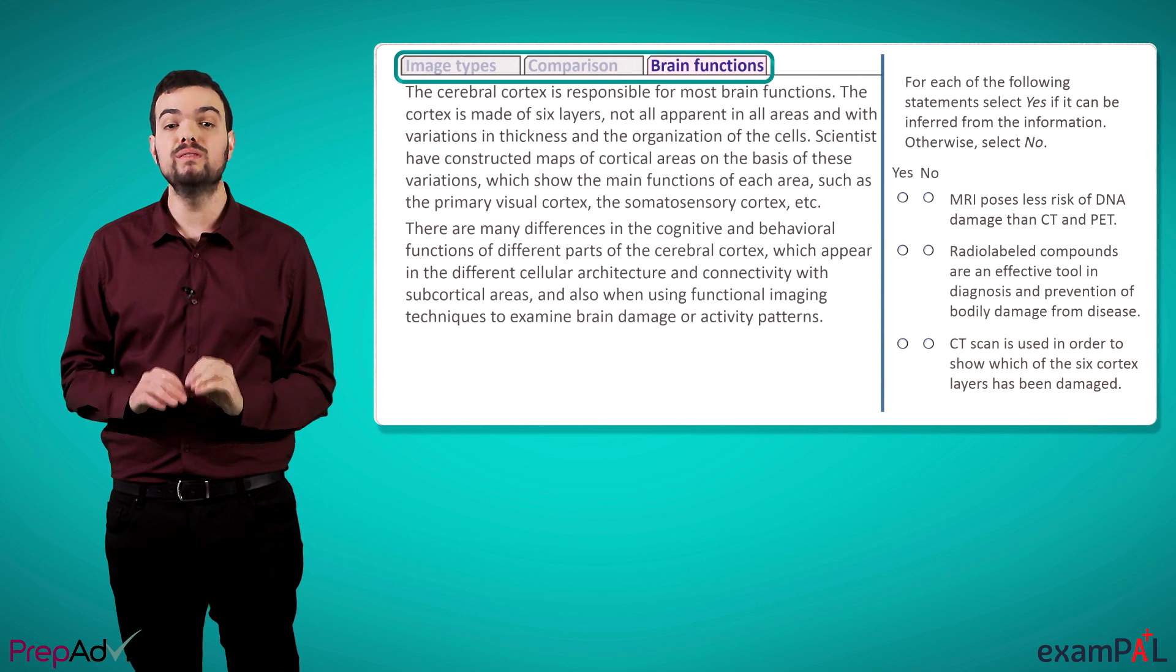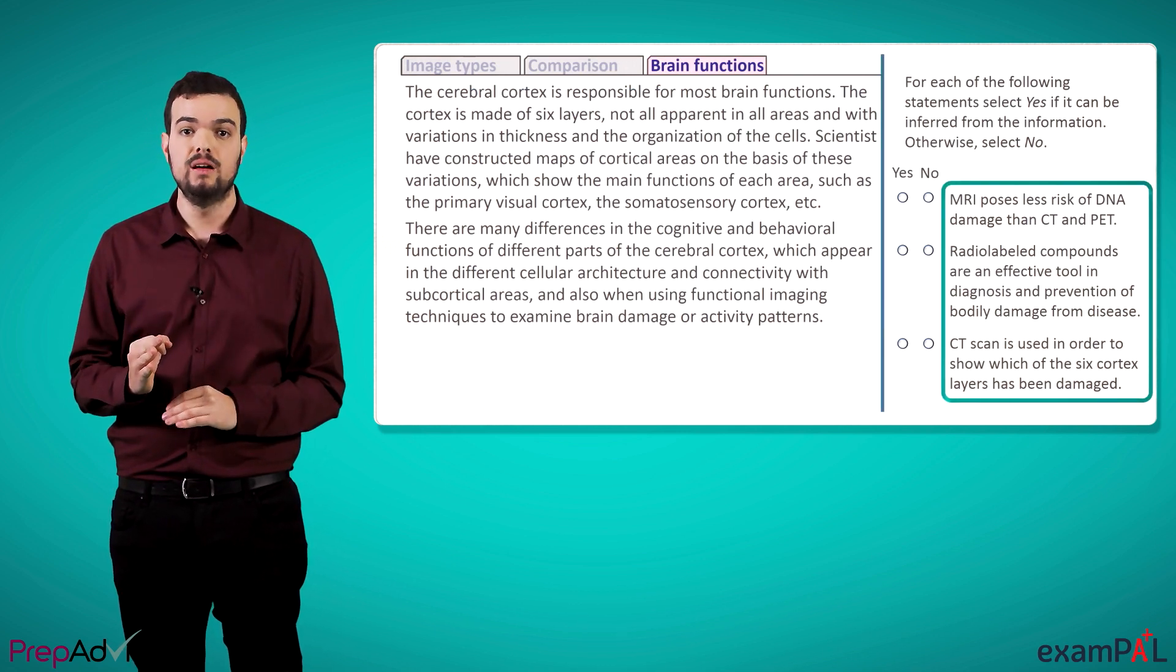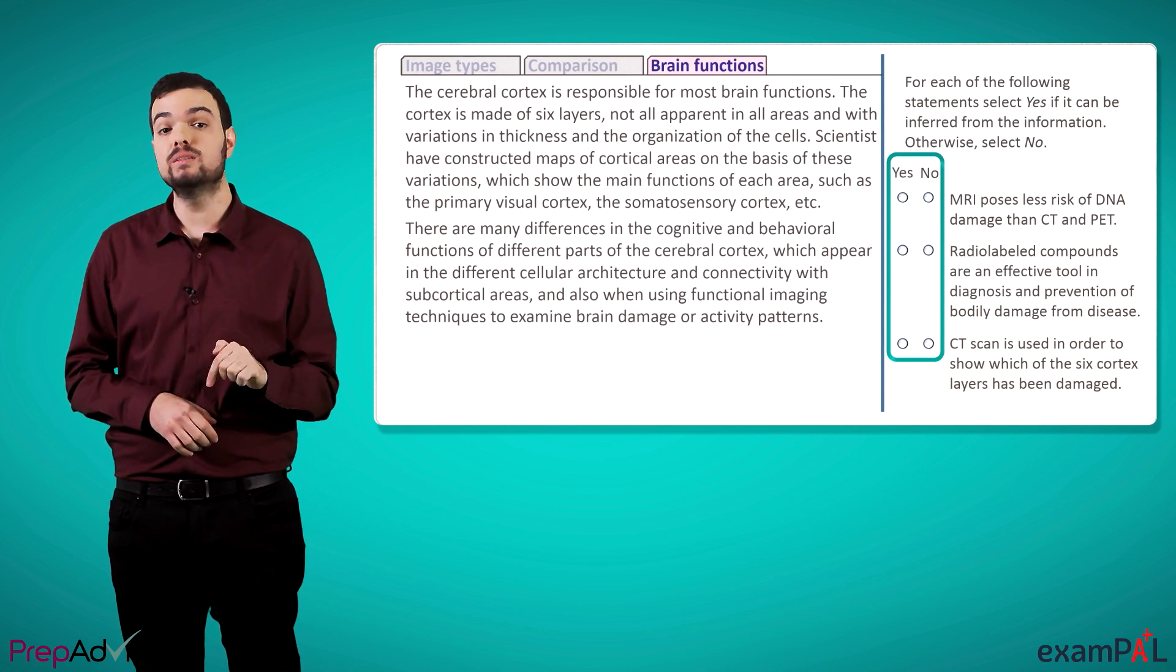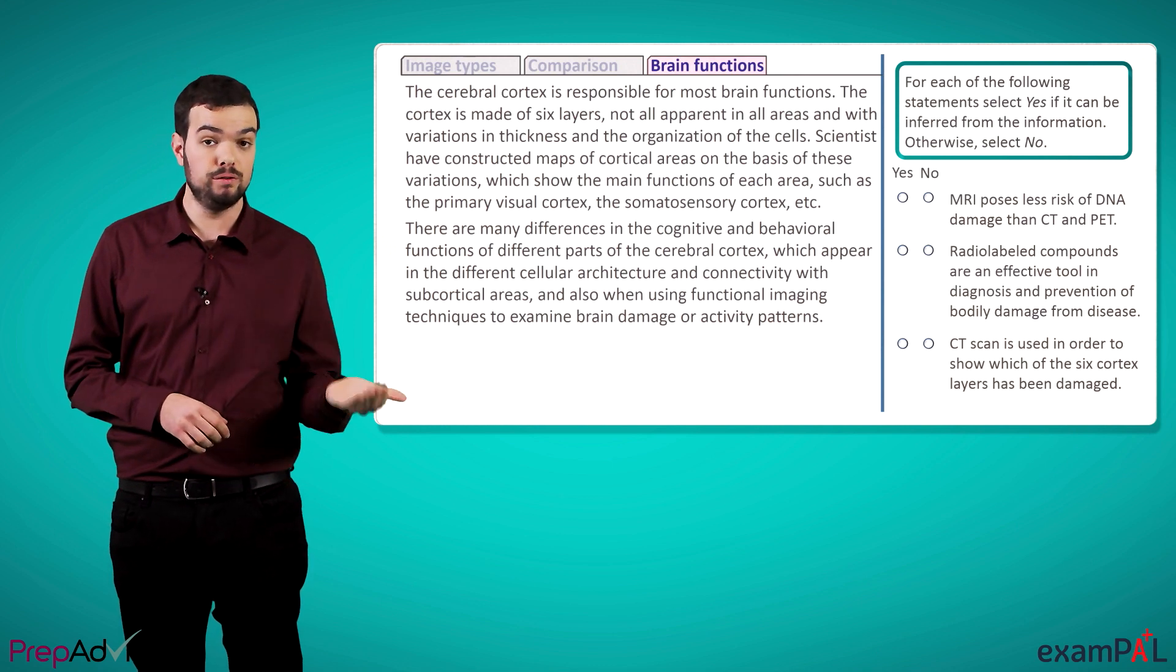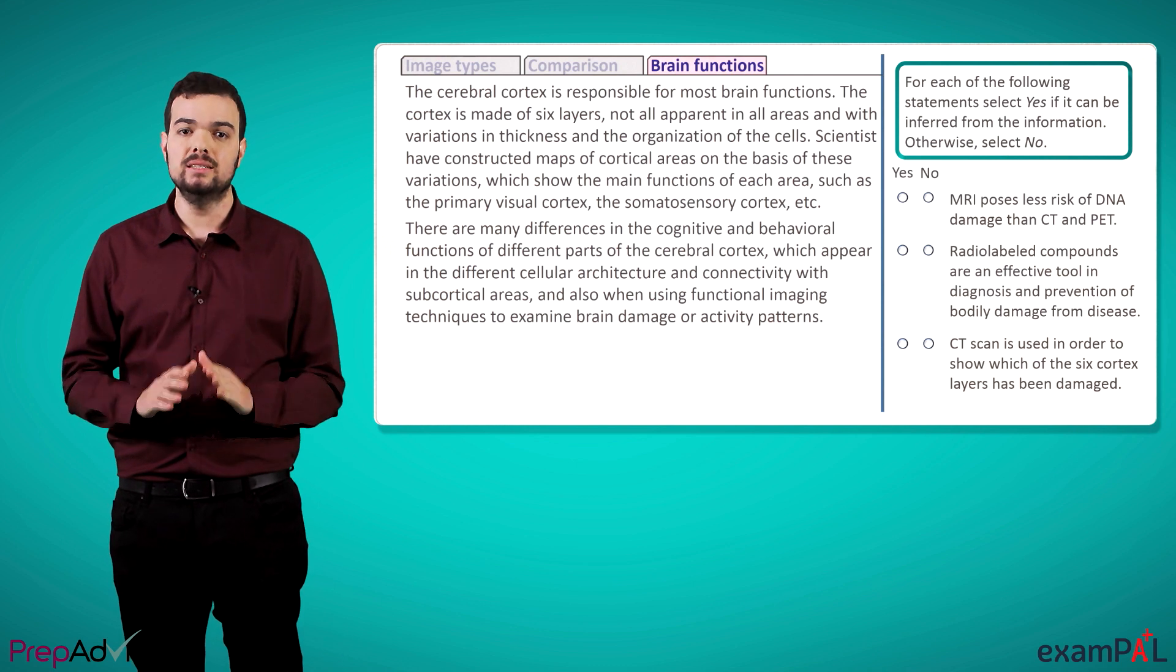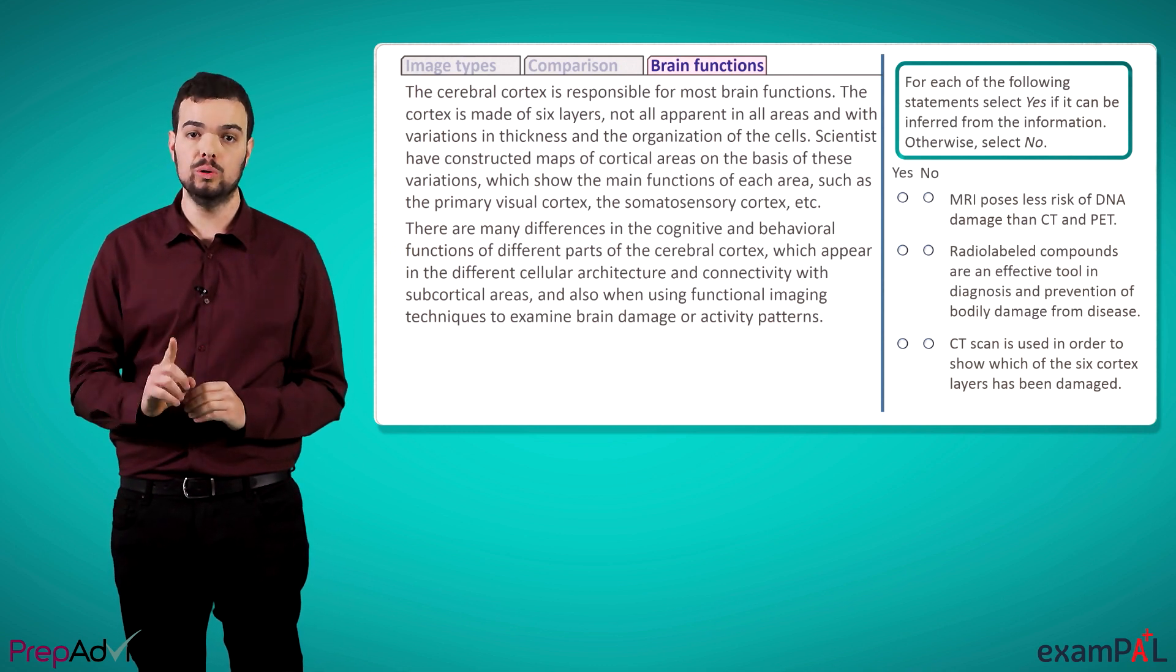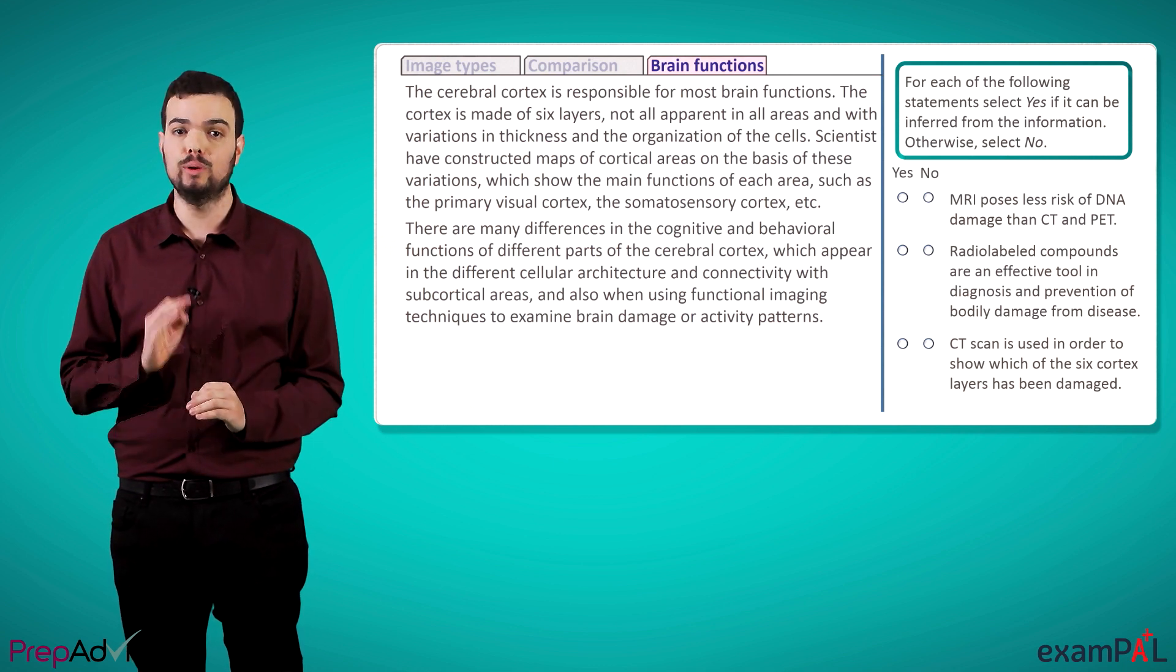Now, we will focus on the right-hand column. There we will see three statements, for each of which we will have to select one of two columns, yes or no. In this particular case, we are asked to select yes if the statement can be inferred from the information, and no if it cannot. As is the case with integrated reasoning in general, all three of these statements make up one question only, and getting this question right means answering all three correctly.